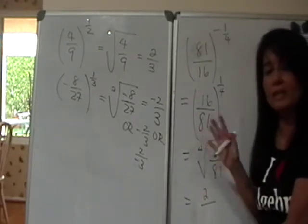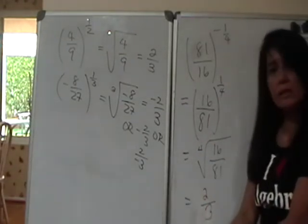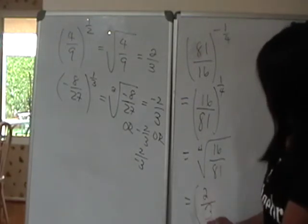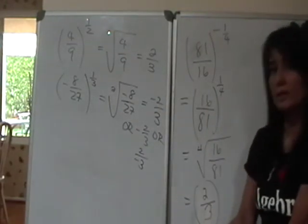81 will be what? It's 4 3's, rather. It's 9 times 9, so you see 4 3's, and you get 3 out. So that's how you deal with these fractional exponents.